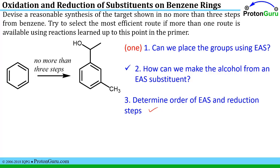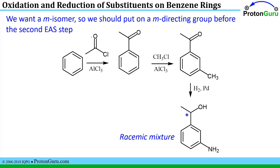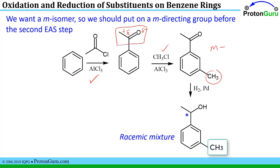Now it's just a matter of figuring out the order of our electrophilic aromatic substitution and reduction steps — we have to put on the methyl group, put on the ketone, then reduce the ketone to the alcohol. We want the meta-isomer, so we put the meta-directing substituent on first. If we put the methyl group on first, it's an ortho-para director, so instead we do the Friedel-Crafts acylation first — the ketone is electron-withdrawing and a meta-director. Then we do the Friedel-Crafts alkylation to place the methyl group meta to the ketone. Finally, we reduce the ketone, adding a hydrogen to each site. Note that you've now made a chiral center, so you'll generate this as a racemic mixture.